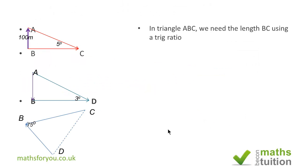For this problem we need three distinct triangles: ABC, ABD, and CBD. In triangle ABC, we need to find BC using a trig ratio. So 100 divided by tan 5 gives us 1143 meters, or in standard form, 1.143 × 10³ meters.